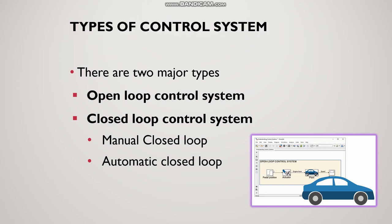What are the types of control systems? There are two major types: open loop system and closed loop system. The closed loop system can be further subdivided into two categories: manual closed loop system and automatic closed loop system. We will cover those when we discuss closed loop systems.